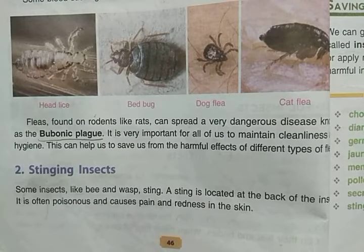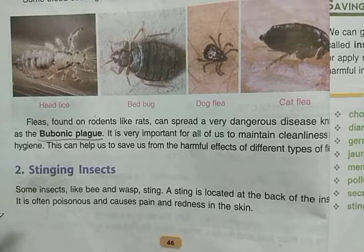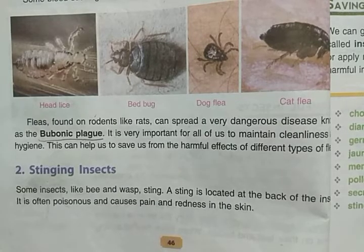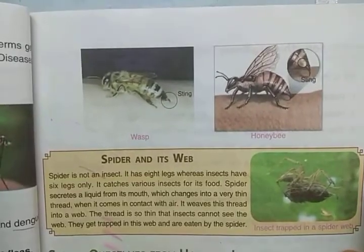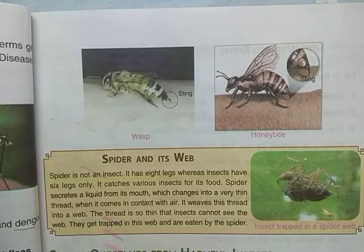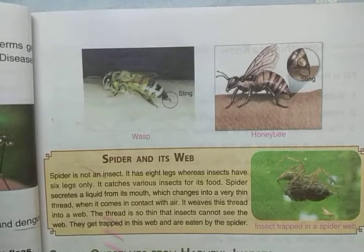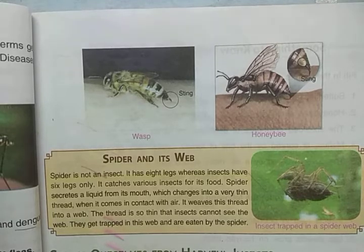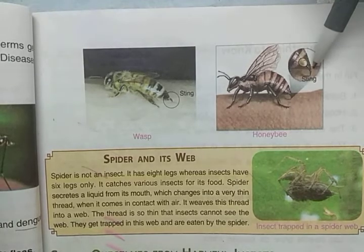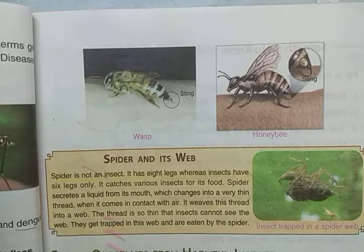Some insects like bees and wasps sting. The sting is located at the back of the insect and it is often poisonous, causing pain and redness in the skin. When a honey bee stings you, you feel pain because they are poisonous — there is swelling and redness in the skin.